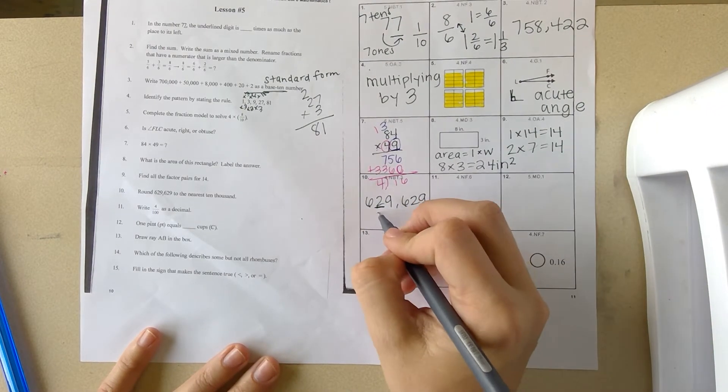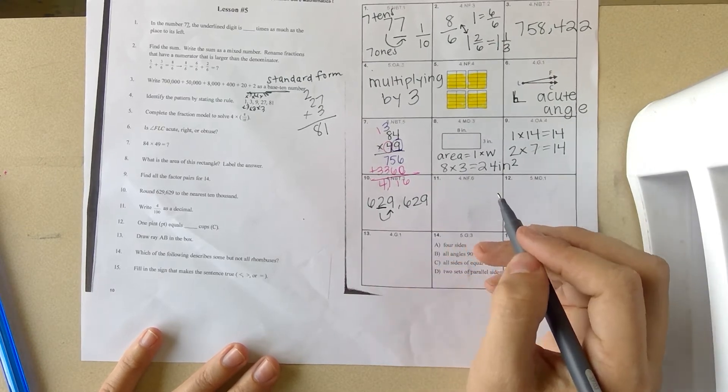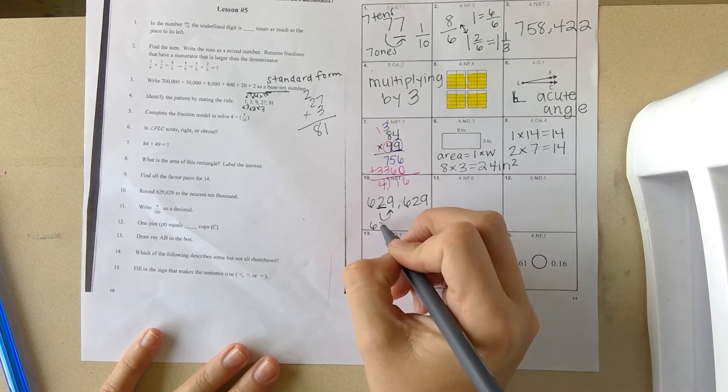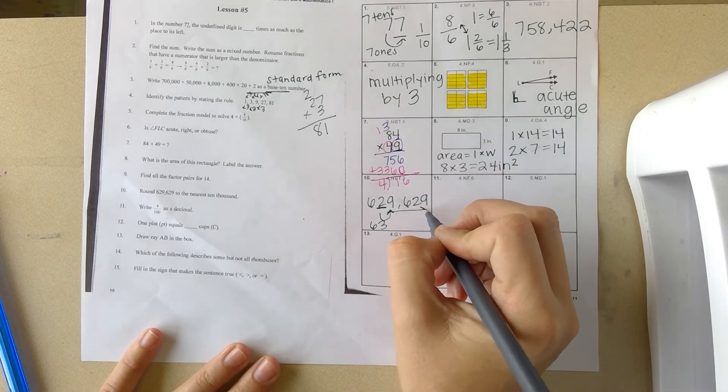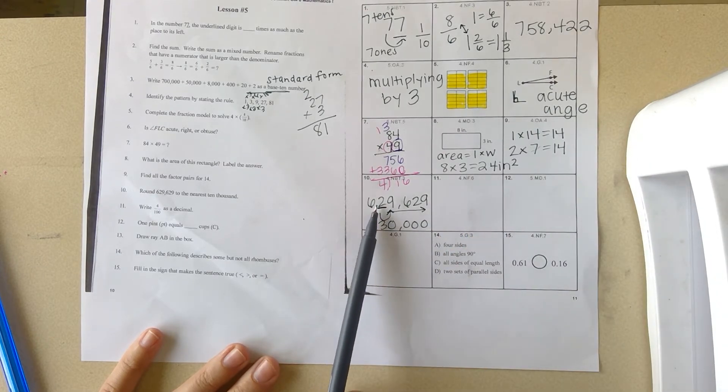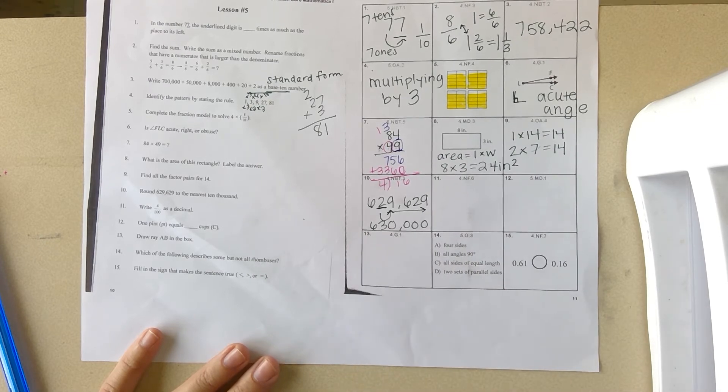There's a 2 there. You look to the right, you ask yourself: is it four or less or five or more? Nine is five or more, so you go up one more. That 2 will turn to a 3. Everything to the right of that will turn to a zero. By rounding 629,629 to the nearest 10,000, you would get 630,000.